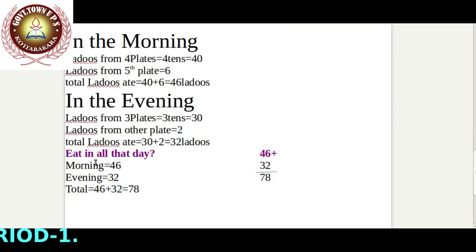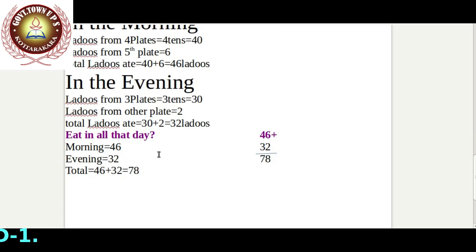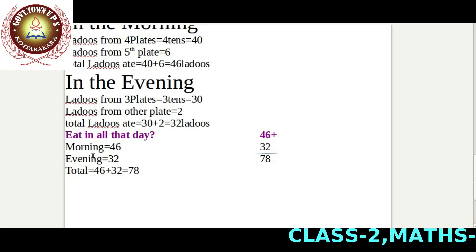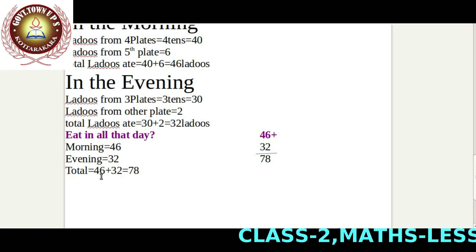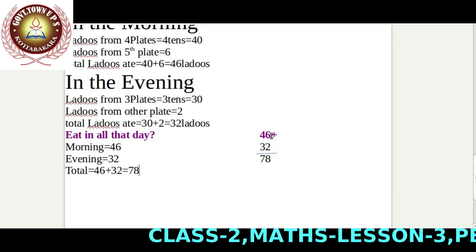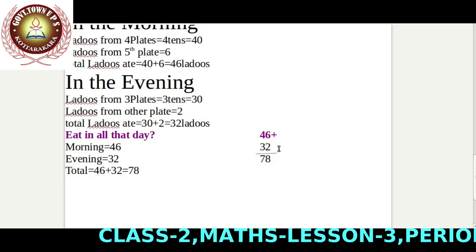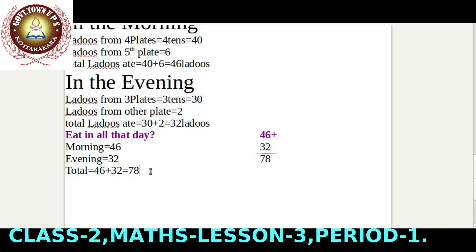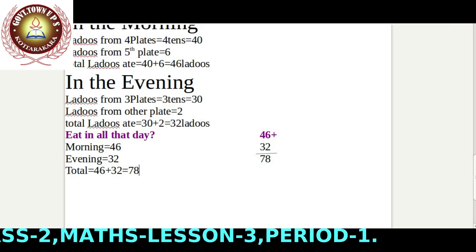We find how many lettuce he ate in all that day. In the morning he ate forty-six lettuce, in the evening he ate thirty-two lettuce. We find the total by adding forty-six plus thirty-two. We start adding from the ones place: six plus two equals eight. Four plus three equals seven. In that day, he ate seventy-eight lettuce in all.